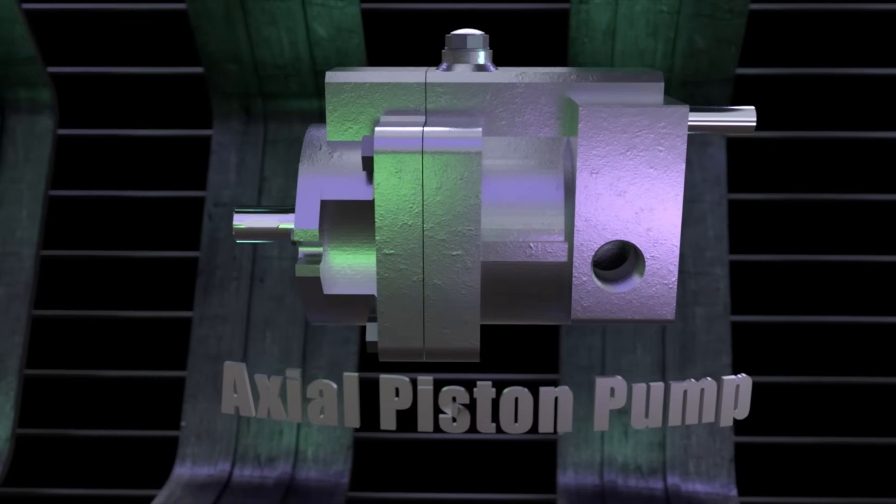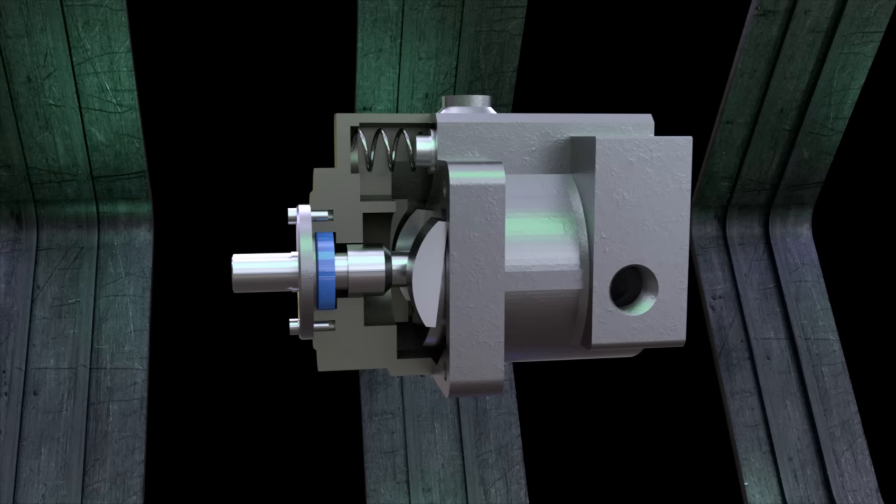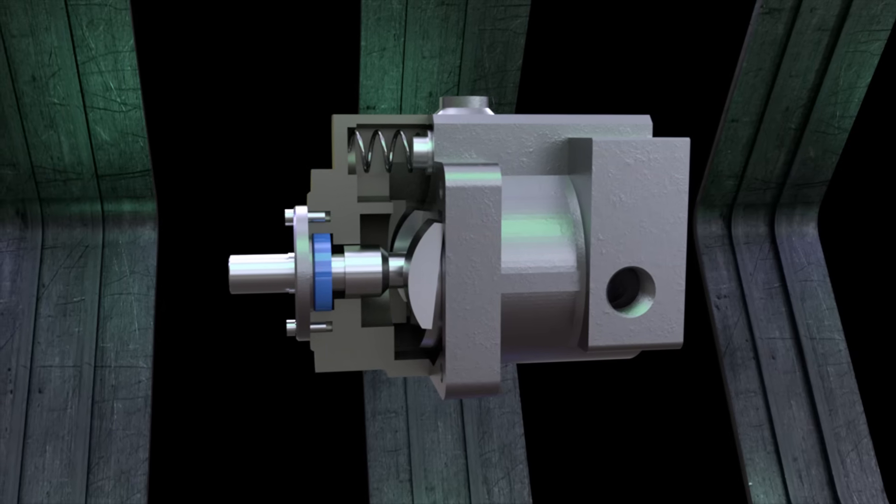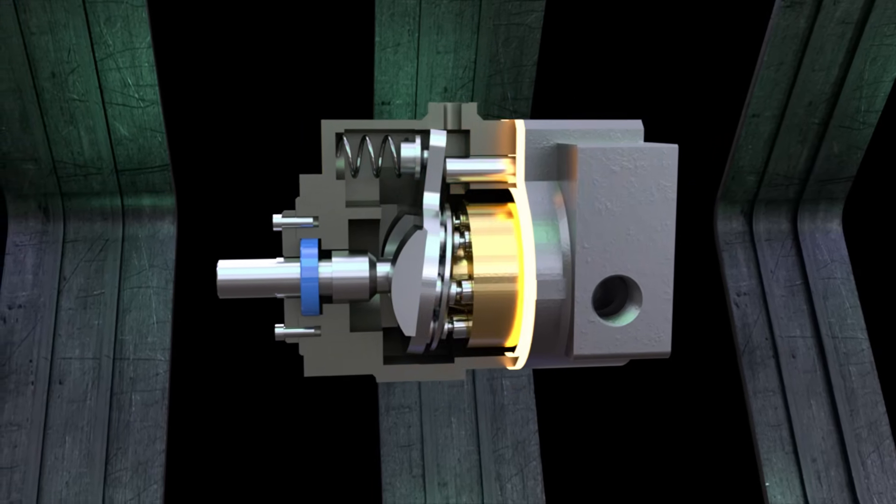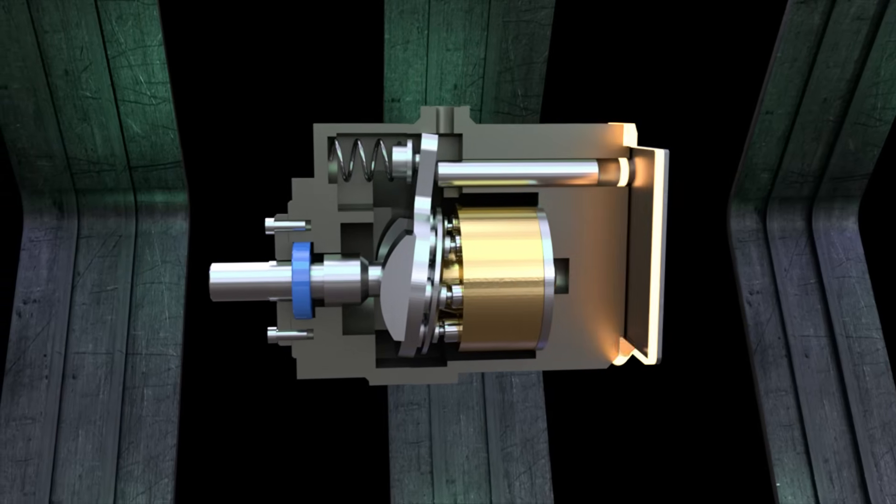Axial Piston Pumps. In axial piston pumps, the pistons are parallel to the axis of rotation of the shaft or slightly inclined at an angle of not more than 45 degrees.